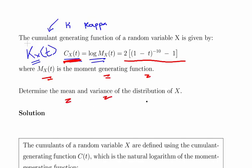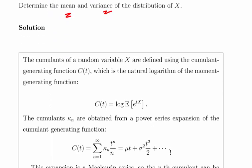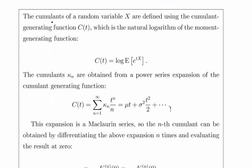Determine the mean and the variance of the distribution of X. There's a good bit of theory in this. The cumulants of a random variable X are defined using the cumulant generating function, which is the natural logarithm of the moment generating function.